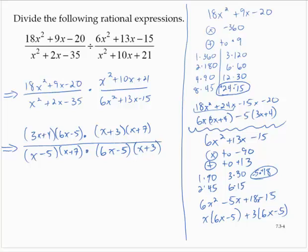All right, removing any common factors. 6x minus 5 is common. x plus 3 is common. x plus 7 is common. We are left with 3x plus 4 over x minus 5.